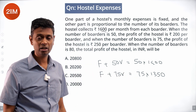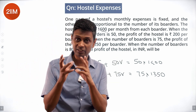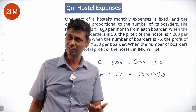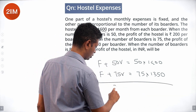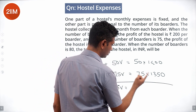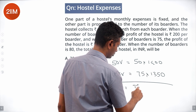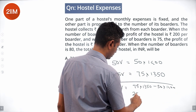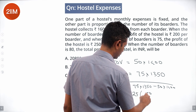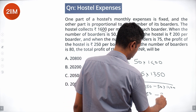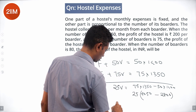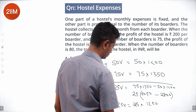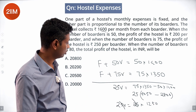F divided by 75 minus F divided by 50 accounts for the remaining Rs. 50 difference. Subtracting the two equations: 25V equals 75 times 1350 minus 50 times 1400, which gives 4050 minus 2800 (in hundreds), or 25V equals 25 times 1250. Therefore, the variable cost per boarder is Rs. 1250.